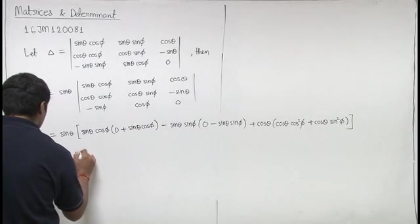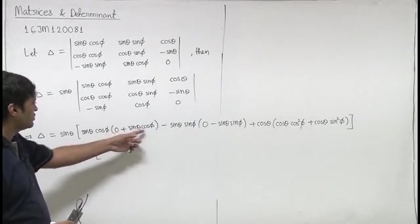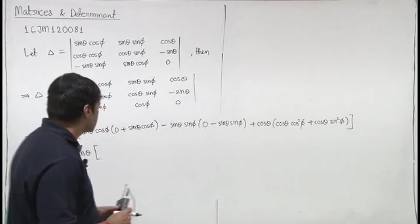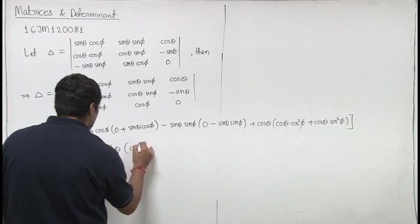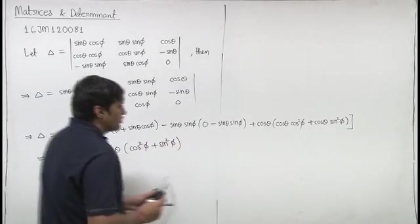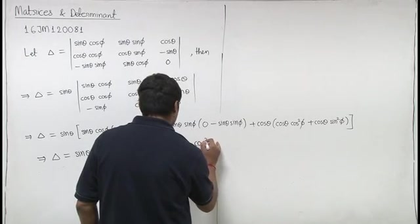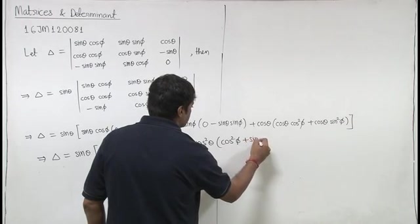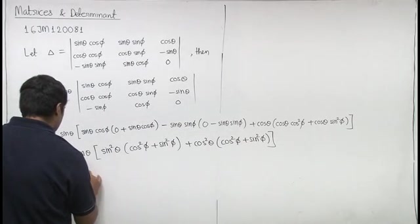So, delta will be sin theta into, now here we have cos square phi plus sin square phi, and here we have cos theta two times common, so here we have cos square theta, and here we have cos square phi plus sin square phi, cos square phi plus sin square phi that is 1.